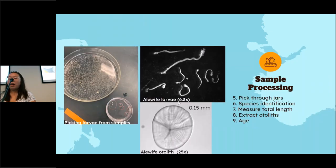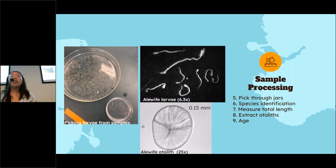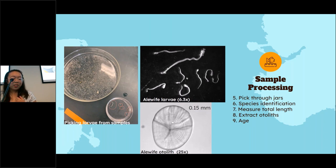Back in the lab, we processed samples by picking through the jars trying to find these tiny larval fish. We identified them and measured their total length. We also extracted their otoliths — ear stones that fish produce made of calcium carbonate structures — which are used to age fish. During the larval stage, fish put on daily rings, and these rings can be used to age the fish and find their hatch date, similar to aging a tree.